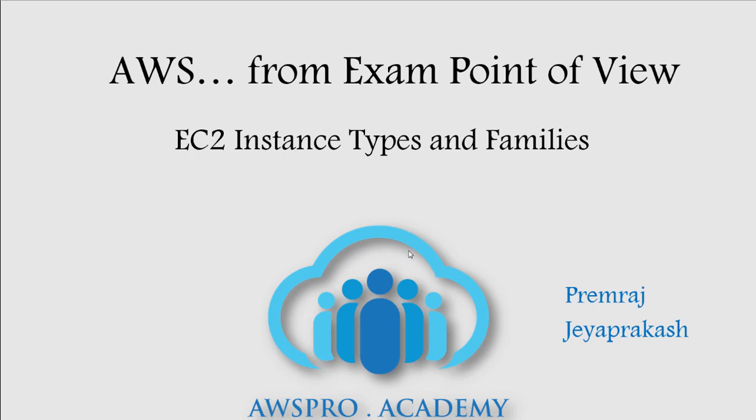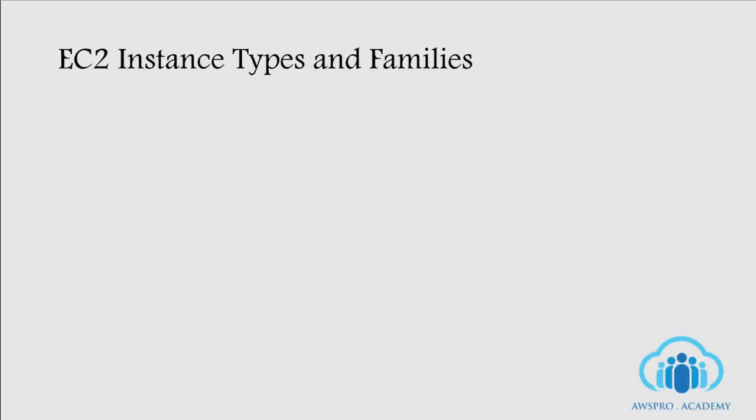In the last few months, I went through all three AWS associate level certification exam preparations. I used a few leading online exam preparation resources and all of them are missing one key exam topic: EC2 instance type and instance families. You can expect between three to five questions in every associate level exam from this topic. Here is the brief session about EC2 instance type and instance families from an exam point of view.